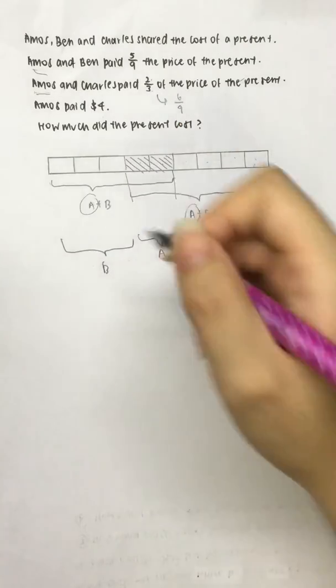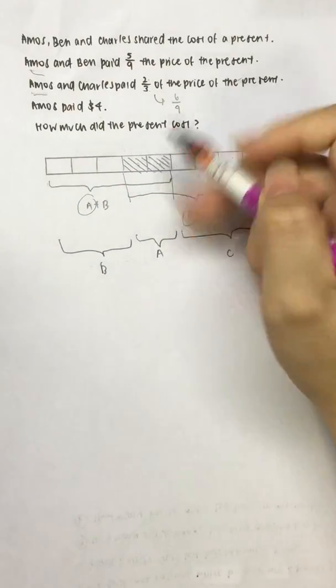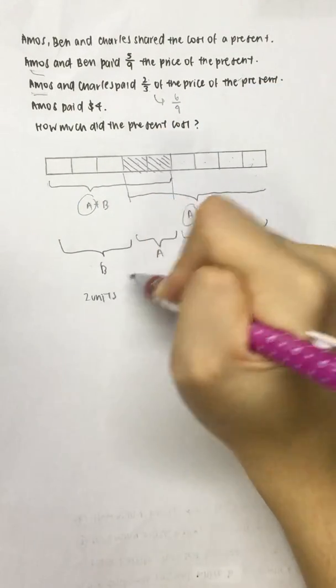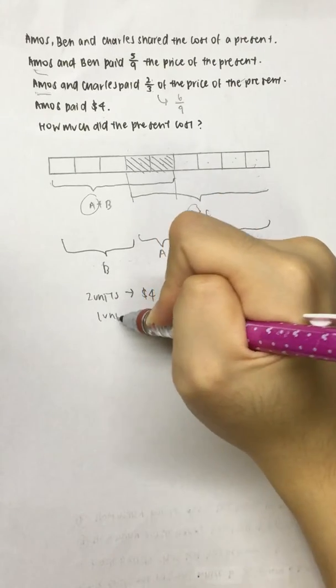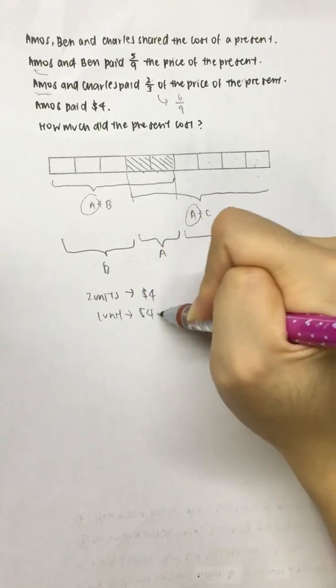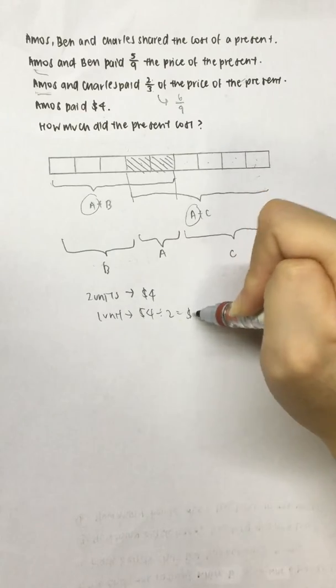The question tells us that Amos paid $4. 2 units would simply be $4. 1 unit would be $4 divided by 2, giving us $2.